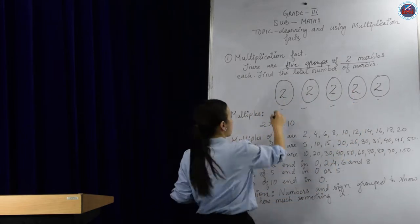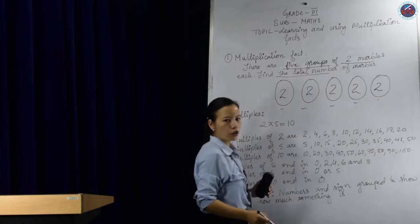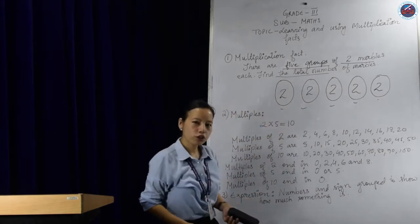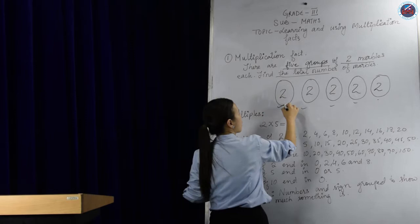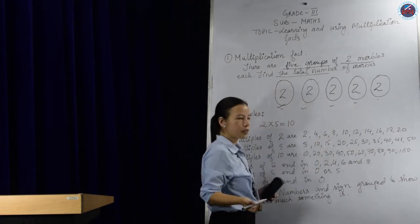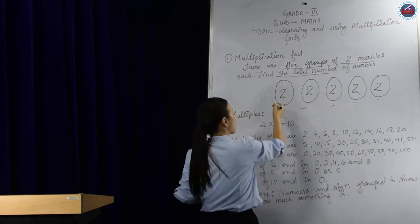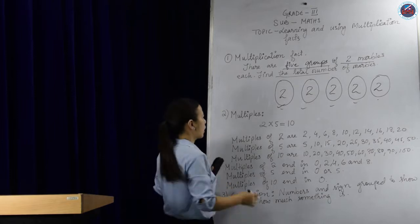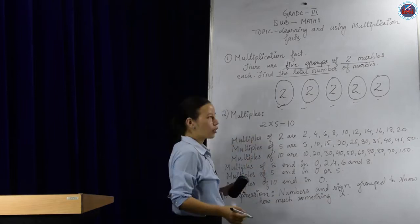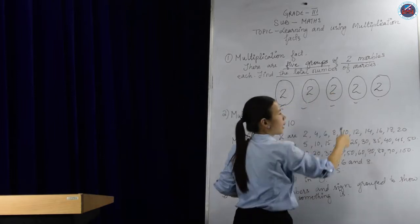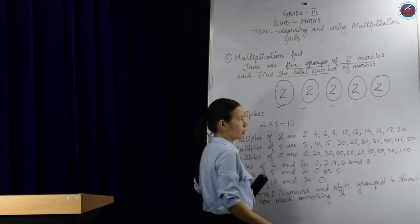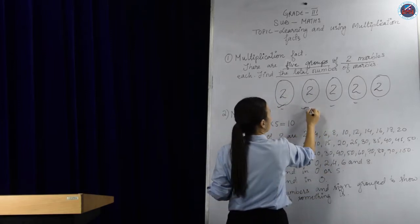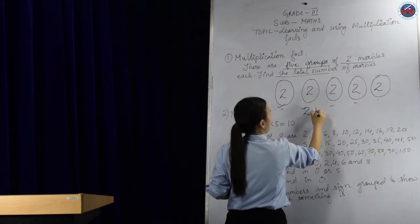Here it says find the total number of marbles. So how do we find the total number of marbles? We know that there are 5 groups of 2 marbles each. So to get the answer — or we call it the product — what we do is we're going to add 2 five times. We have 5 groups of 2 marbles each, so add 2 five times.